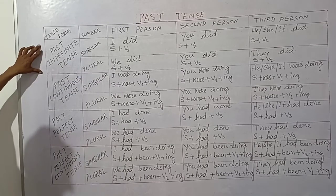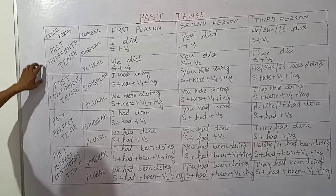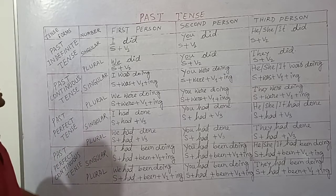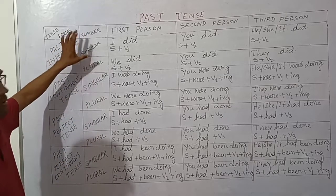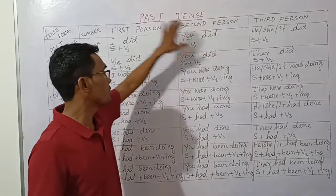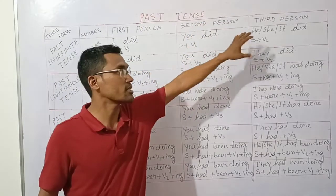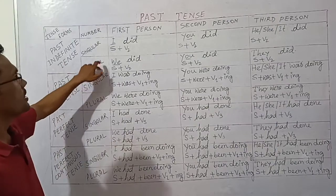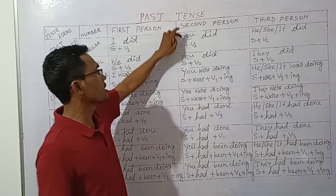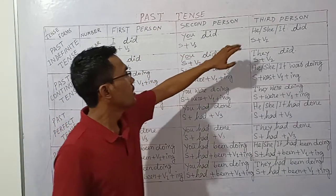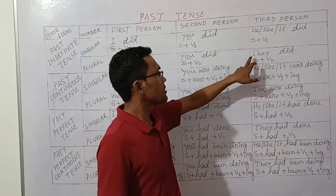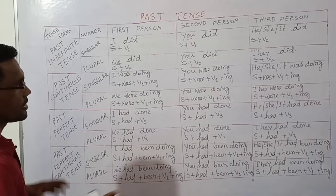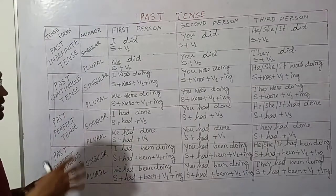We will transform and learn past indefinite tense, past continuous tense, past perfect tense, and past perfect continuous tense. We will look at singular and plural persons: first person singular, second person, and third person singular and plural.